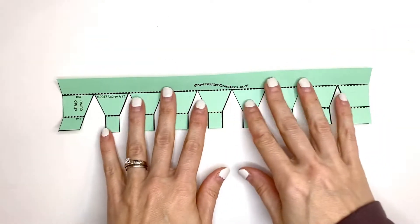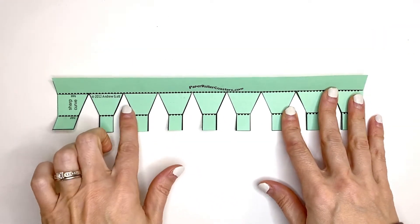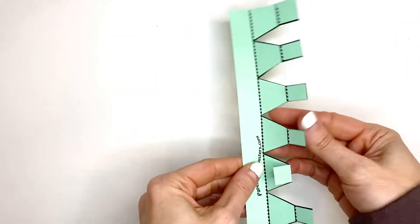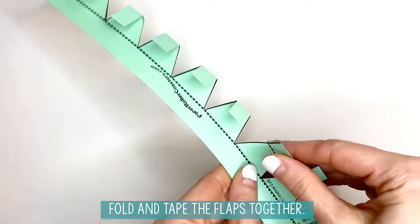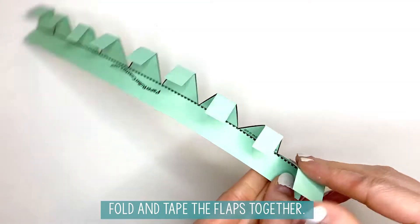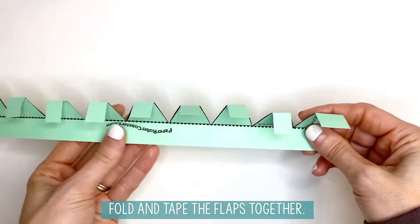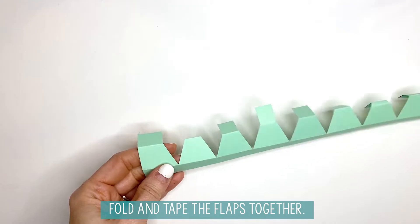Once you have all of those shaded pieces cut out along those solid lines, make sure that all of these flaps can fold over those lines that you traced. Then you're going to flip this upside down and we are going to tape these together.